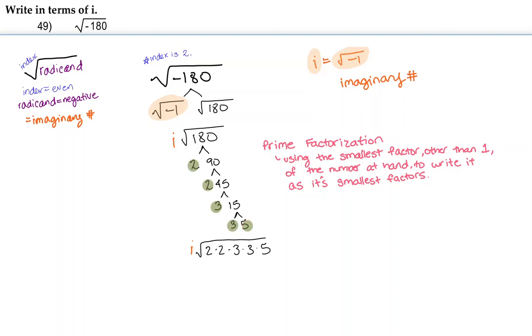Because the index is 2, we can go ahead and take out groups of 2. So here we have a group of 2 2's, and then here we have a group of 2 3's.